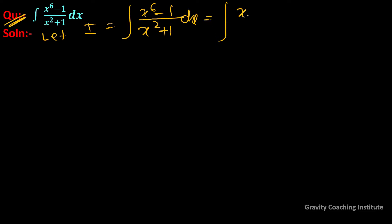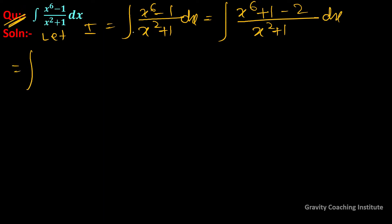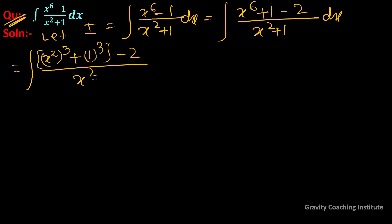So this equals integration of (x to the power 6 plus 1 minus 2) upon (x square plus 1) dx. We can write x to the power 6 as (x square) to the power cube, and 1 as 1 ki cube, minus 2 upon x square plus 1 dx. And here we will use an identity.